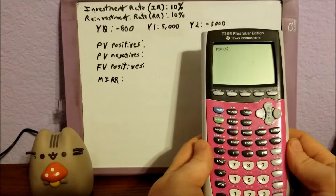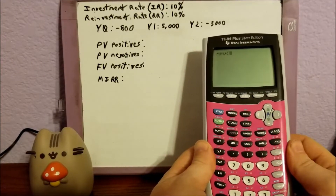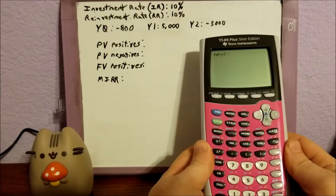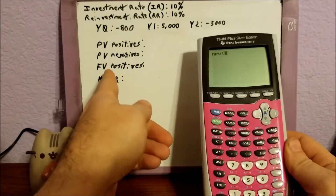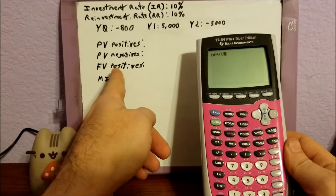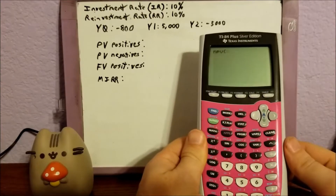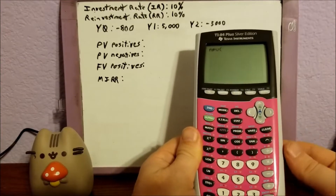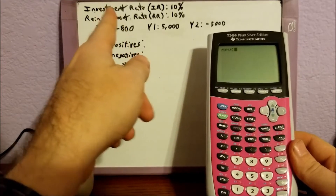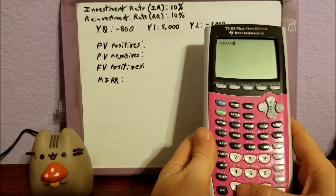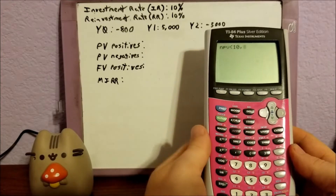The very first input is going to be the interest rate. For the positives, we're going to use the reinvestment rate — not the initial investment rate — because we're getting the future value of the positives eventually; we're reinvesting what we initially invested in the present. The present value of the negatives will use the initial investment rate. In this case they're the same, so we enter 10, comma.